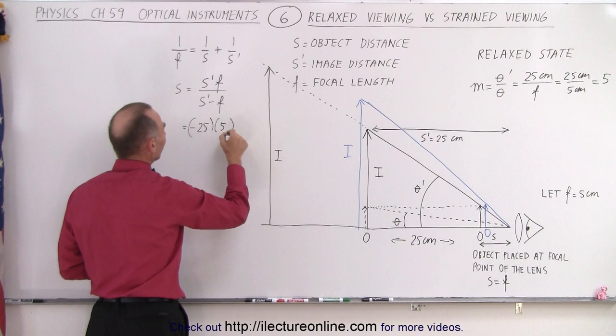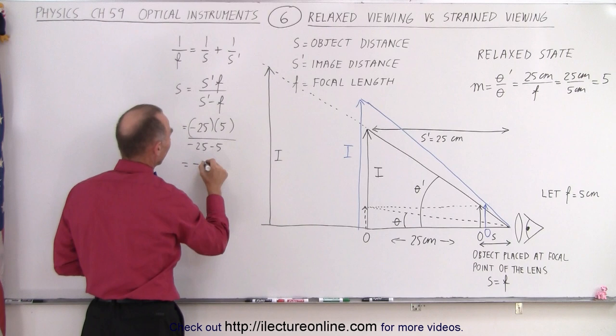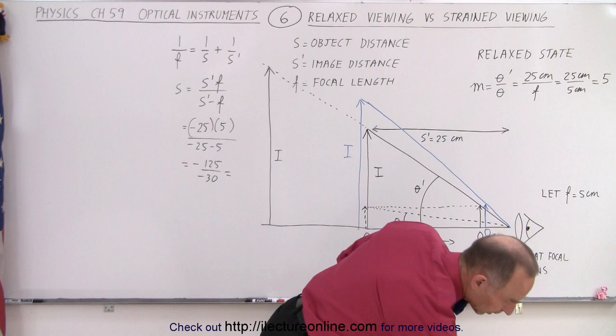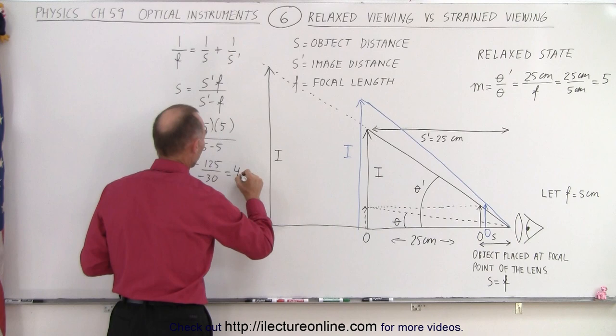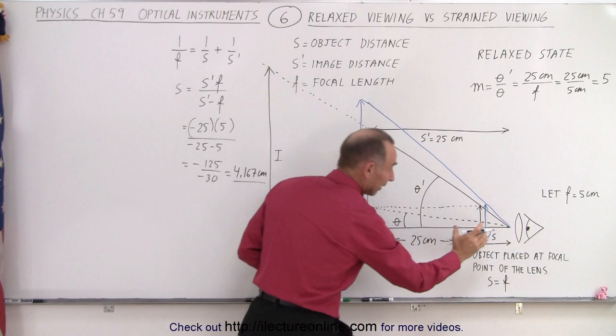Focal length of 5 centimeters divided by minus 25 minus 5. So this is equal to minus 125 over minus 30, which is an object distance of 125 divided by 30, which is 4.167 centimeters. So 4.167 centimeters. So what we do now is place the object at slightly over 4 centimeters instead of 5 centimeters.